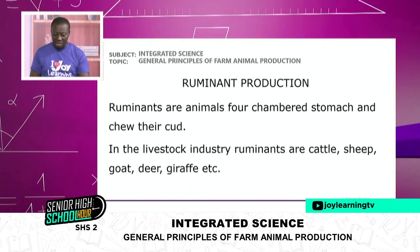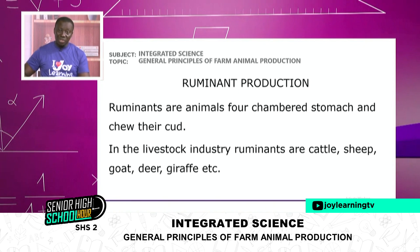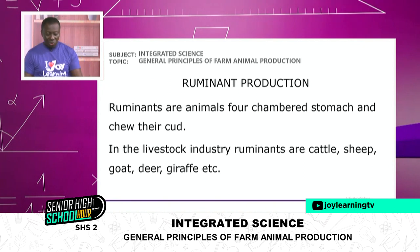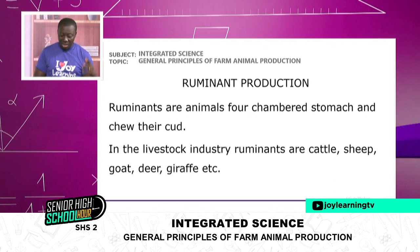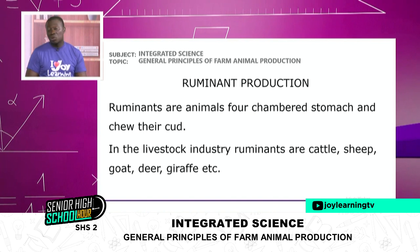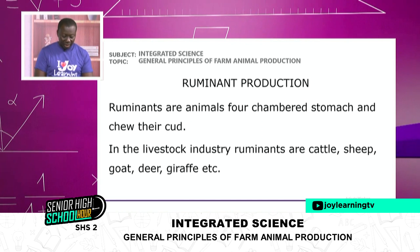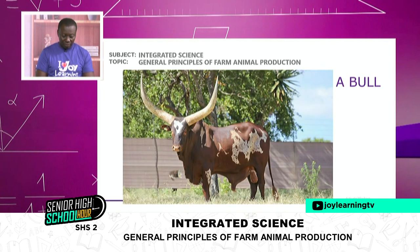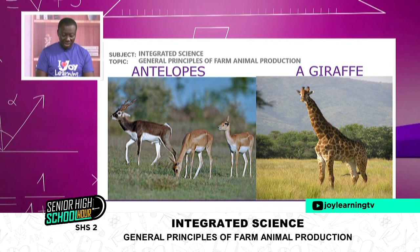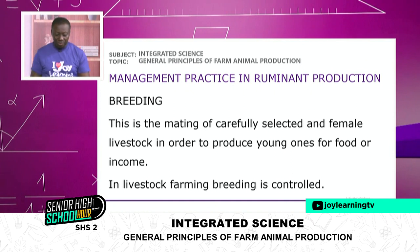Let us look at ruminant production. Ruminants are animals with four stomach chambers and they chew their cud. Examples of ruminants are cattle, sheep, goats, deer, and giraffes. The pictures are still rolling on your screen — these are all ruminants. Now let's look at the management practice in ruminant production. When it comes to breeding, this is the mating of carefully selected male and female livestock in order to produce young ones for food or income. In livestock farming, breeding is controlled.